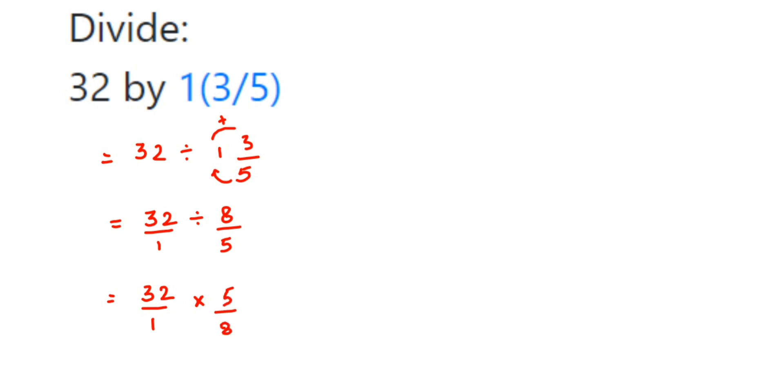Now try to cancel the numbers if possible. I can cancel 8 and 32. 8 ones are 8, and 8 fours are 32. So the number left is 4. In the numerator, multiply: 4 times 5 is 20. In the denominator we have 1, so 20 over 1, or you can just write 20.